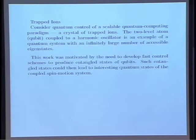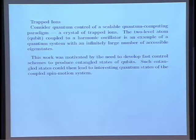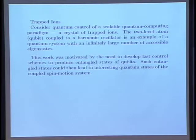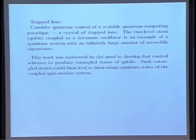Let me begin with trapped ions. This is a paradigm of a scalable quantum computer. The idea is you can think of a two-level atom — a qubit — coupled to a harmonic oscillator. You have the ion, and you look at spin flips in the ion; those are the two states of the qubit. It's in a trap, and these ions oscillate back and forth, and these modes correspond to the harmonic oscillator. The basic paradigm is a spin system coupled to a harmonic oscillator, motivated by developing control schemes to produce entangled states of qubits — the most general kind of state, carrying the most information.